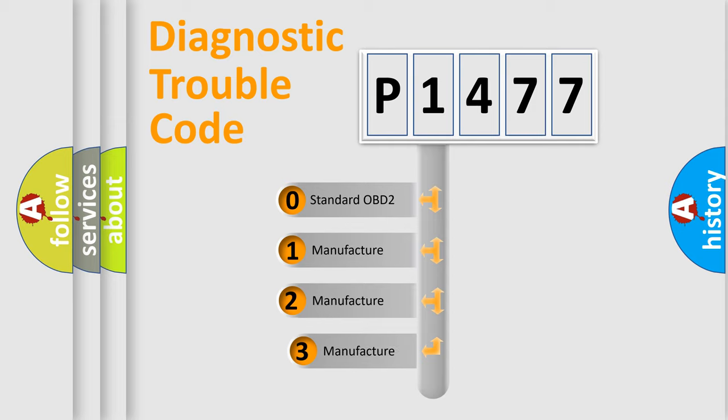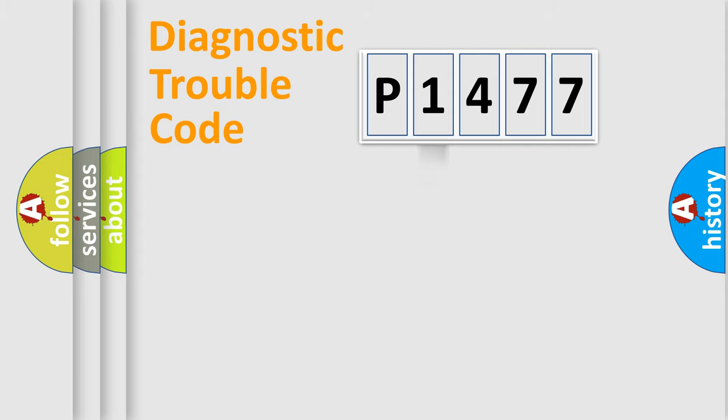If the second character is expressed as zero, it is a standardized error. In the case of numbers 1, 2, or 3, it is a manufacturer-specific error.